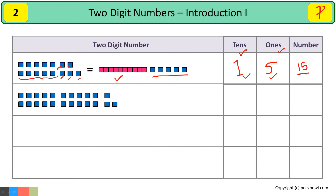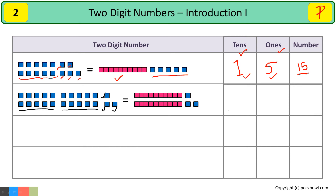Let us take one more example. Here we have ten ones, so I will write one ten for this. And for this next ten ones, I will bring one more tens line. After that, there are 1, 2, and 3 ones. This is less than ten, so I will place three ones as it is. At the ones place, I will write three. And we have two tens, so at the tens place I will write two. So this number is twenty-three. In number twenty-three, we have three at the ones place and two at the tens place.